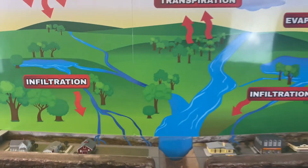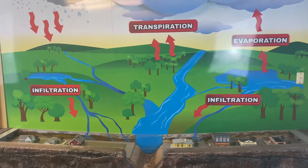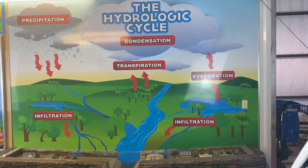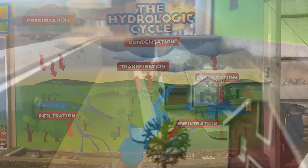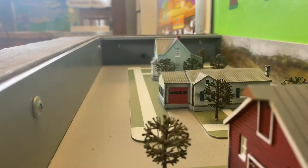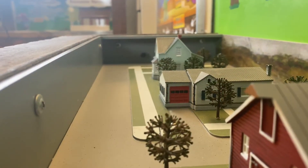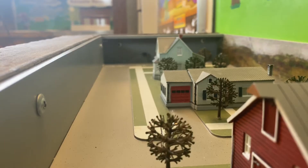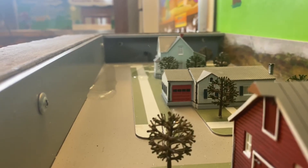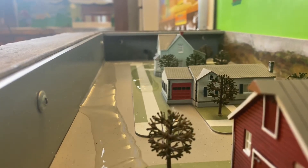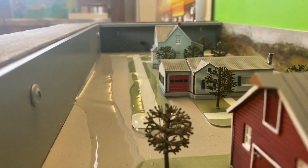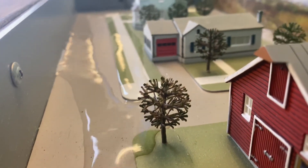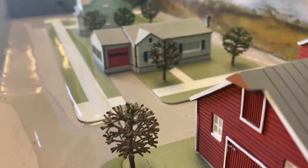This exhibit focuses on watersheds, the water cycle, and human impacts on the environment. Let's get started. Think of a watershed as an above-ground drainage basin. All rivers and tributaries will eventually end up draining to a central location, and they oftentimes pick up contaminants and particulates from the places they've traveled.